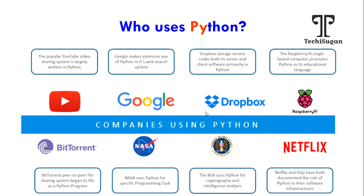NASA uses Python for scientific scripting, and for secret information transfer — that is cryptography — they also use Python. Python is used in artificial intelligence, data science, and many other domains. Netflix's software infrastructure is also written using Python. These are a few of the many companies that use Python extensively.